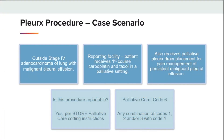Here is another Plurax procedure case scenario. We have an outside stage 4 adenocarcinoma of the lung with malignant pleural effusion. The patient presents to the reporting facility and receives first course carboplatin and taxol in a palliative setting. The patient also receives palliative Plurax drain placement specifically for pain management of persistent malignant pleural effusion. This is reportable per palliative care coding instructions and would be coded as code 6 — any combination of codes 1, 2, and/or 3 with code 4 — due to the palliative chemotherapy and pain management.